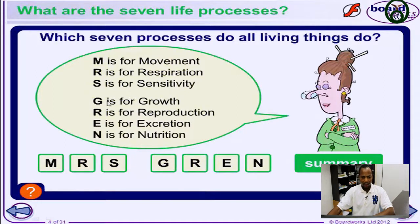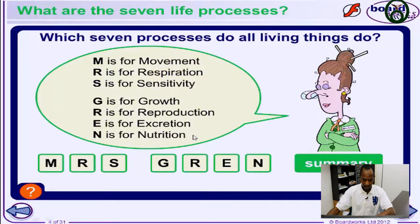MRS GRAIN is just a short notation for the several life processes. In my case, I'm adding one now — death. I said death is a characteristic of all living things because eventually all living things, plants and animals, die at the end of their life process. So it's part of the characteristics of living things.